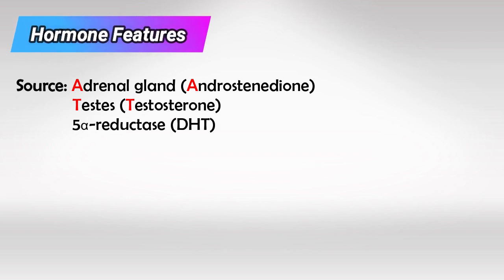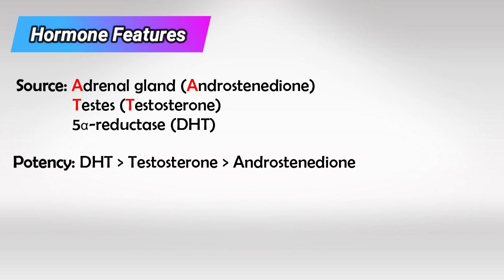When we say androgens, we refer to androstenedione, which is secreted from the adrenal gland; testosterone, which is secreted from the testes; and dihydrotestosterone, which is testosterone converted by the enzyme 5-alpha reductase. Potency-wise, dihydrotestosterone is the most potent and androstenedione is the least potent.